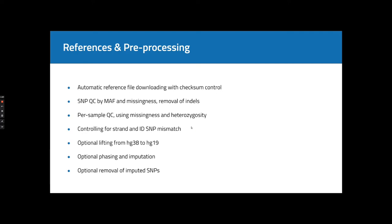In essence, we remove all indels, we remove all rare SNPs, we check for strand and SNP ID mismatches, we remove all suspicious samples because they can corrupt our results, and we have optional phasing, imputation, removal of previously imputed SNPs, and optional lifting from one genome assembly to another.